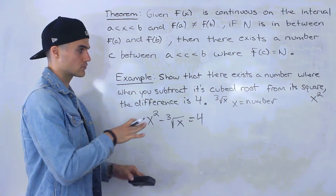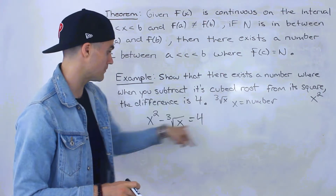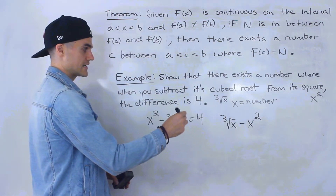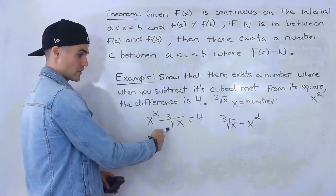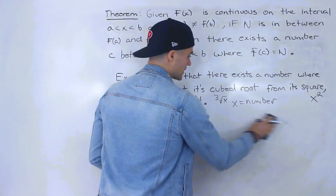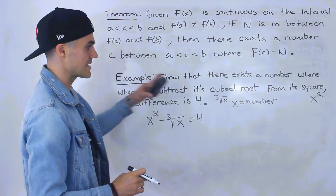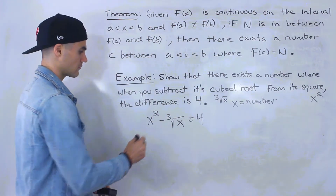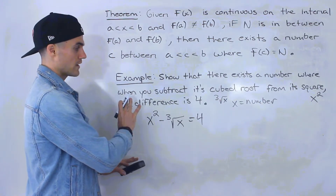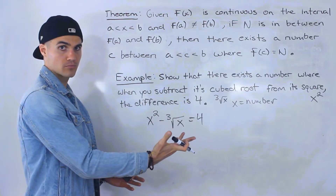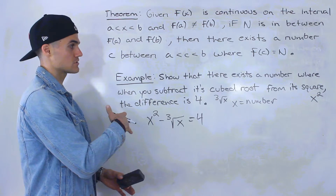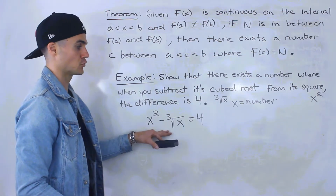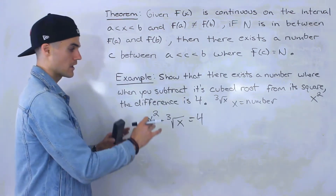Make sure you read the description carefully. We're subtracting the cube root from the square, so it's x squared minus the third root of x — not the other way around. Now this question becomes: we have to show that this equation has at least one real root, which is exactly the same as the previous three examples.